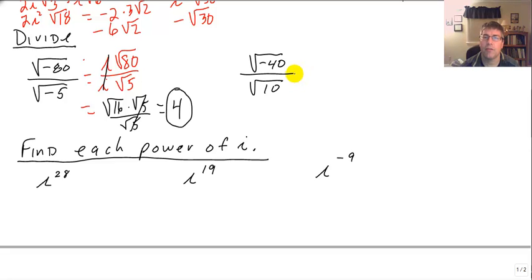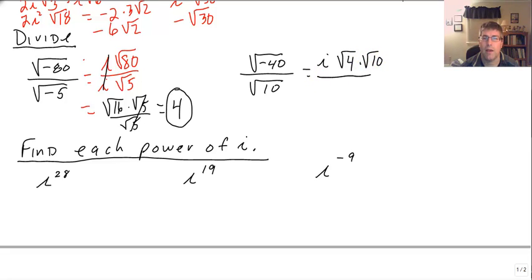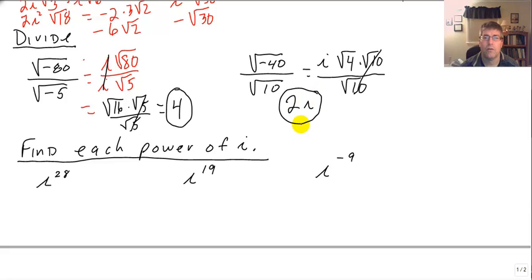Similarly, the square root of negative 40 over the square root of 10 — take the i out. The square root of 40 becomes the square root of 4 times the square root of 10, all over the square root of 10. The square root of 10's cancel, leaving i times the square root of 4, which simplifies to 2i.